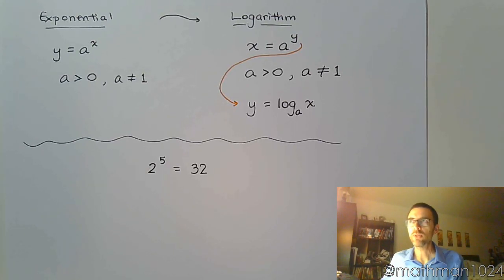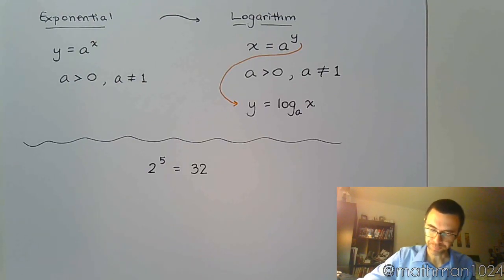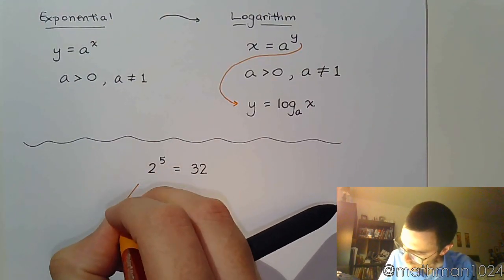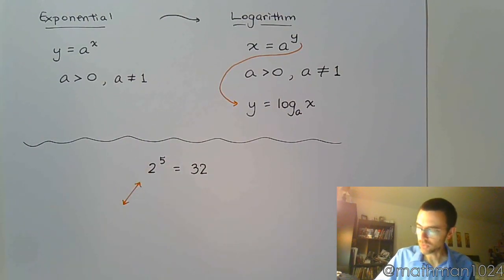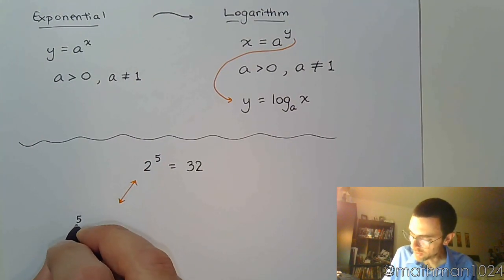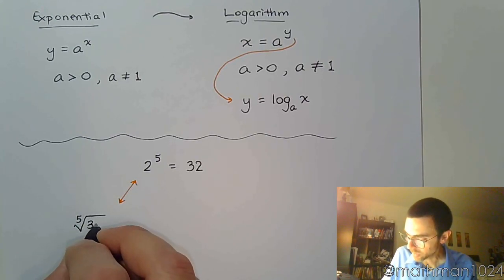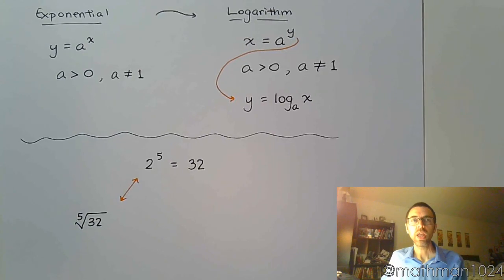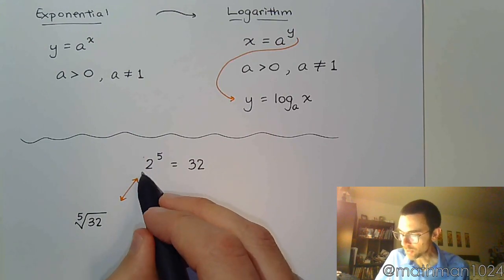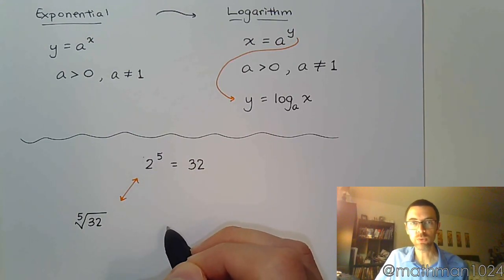Well, let's think about how we ask a question related to this using radicals. So using radicals we would say: what is the 5th root of 32? And when we ask for the 5th root of 32, what we're asking for is something to the 5th power equals 32.